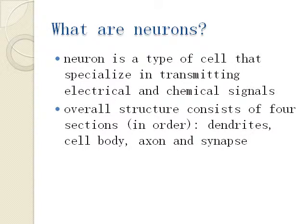What are neurons? Neurons are a special type of cell that specializes in transmitting electrical and chemical signals throughout your body. Their overall structure consists of four major parts: the dendrites, cell body, axon, and the synapse.